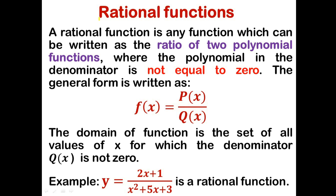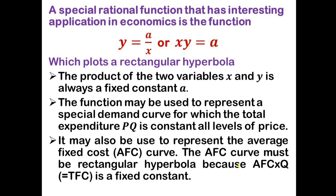Another type of algebraic function is the rational function. A rational function is any function which can be written as the ratio of two polynomial functions where the denominator is not equal to zero. The general form is f of x equals p of x divided by q of x. The domain is the set of all values of x for which q of x is not equal to zero. For example, y equals (2x plus 1) divided by (x squared plus 5x plus 3) is a rational function.